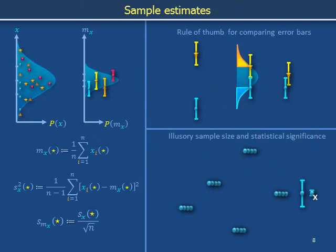In this most recent section, we've just reviewed a rule of thumb for comparing error bars and provided visual intuition. In the next video, we will discuss illusory sample size and illusory statistical significance.